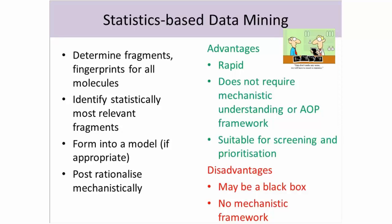With statistics-based data mining, you can take some data, throw some stats at it, and hopefully start to see some molecular fragments come out the other side. It can work, and it has advantages — it's pretty quick, computers can do things rapidly, and it doesn't require mechanistic understanding of your toxicological endpoint. It can be suitable for screening and prioritization. The disadvantages are you might end up with a black box, and you have no mechanistic framework.